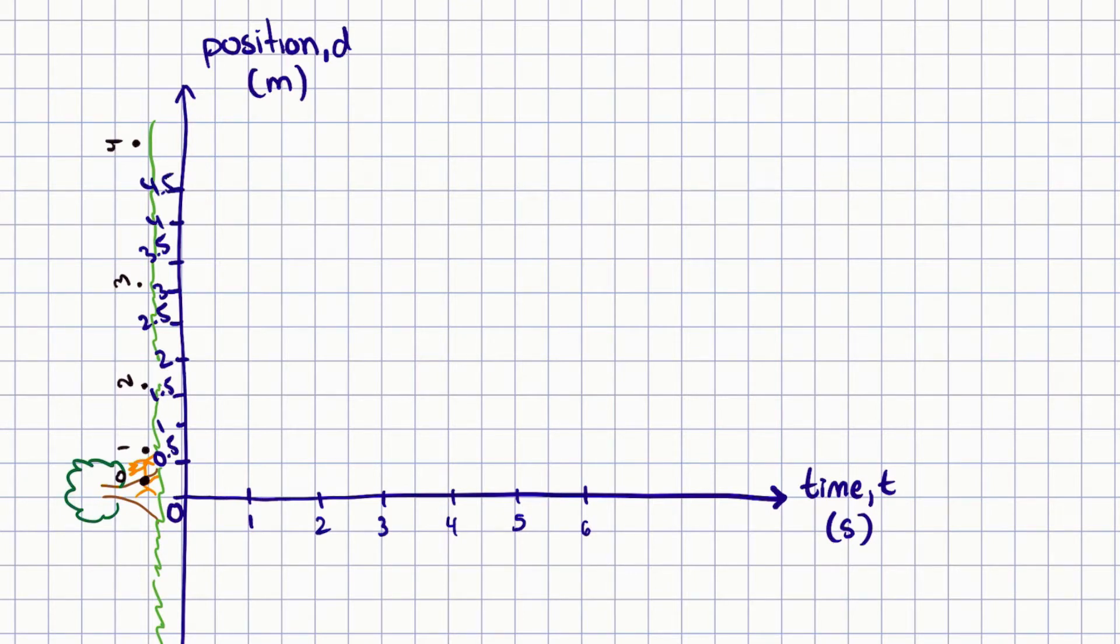Now when we want to draw the position-time graph, we want to locate at time zero where is the cheetah. Well, it happens to be right at the origin at one second.